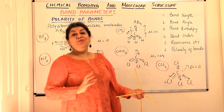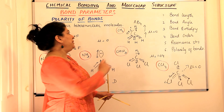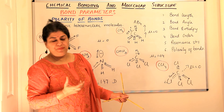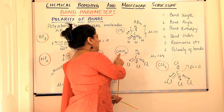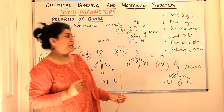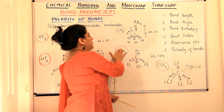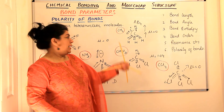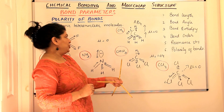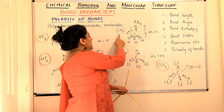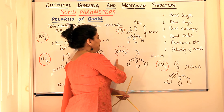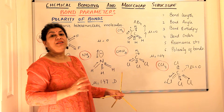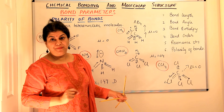Let us now move to the next type of molecules — the AB4 type, or we could say AB3C type, since one example has atoms of three elements. We'll take examples: methane, chloroform, and carbon tetrachloride. I'm still holding the pencils because I want to explain the structure to you. These molecules have a tetrahedral structure.